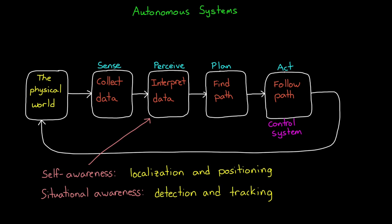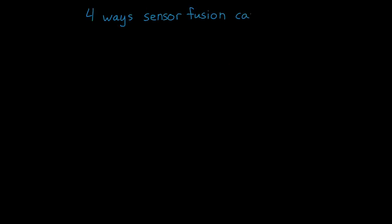So where does sensor fusion come in? Well, it sort of straddles sense and perceive, as it has a hand in both of these capabilities. It's the process of taking multiple sensor measurements, combining them, and mixing in additional information from mathematical models with the goal of having a better understanding of the world which the system can use to plan and act. So with that in mind, let's walk through four different ways that sensor fusion can help us do a better job at localization and positioning of our own system, as well as detecting and tracking other objects.